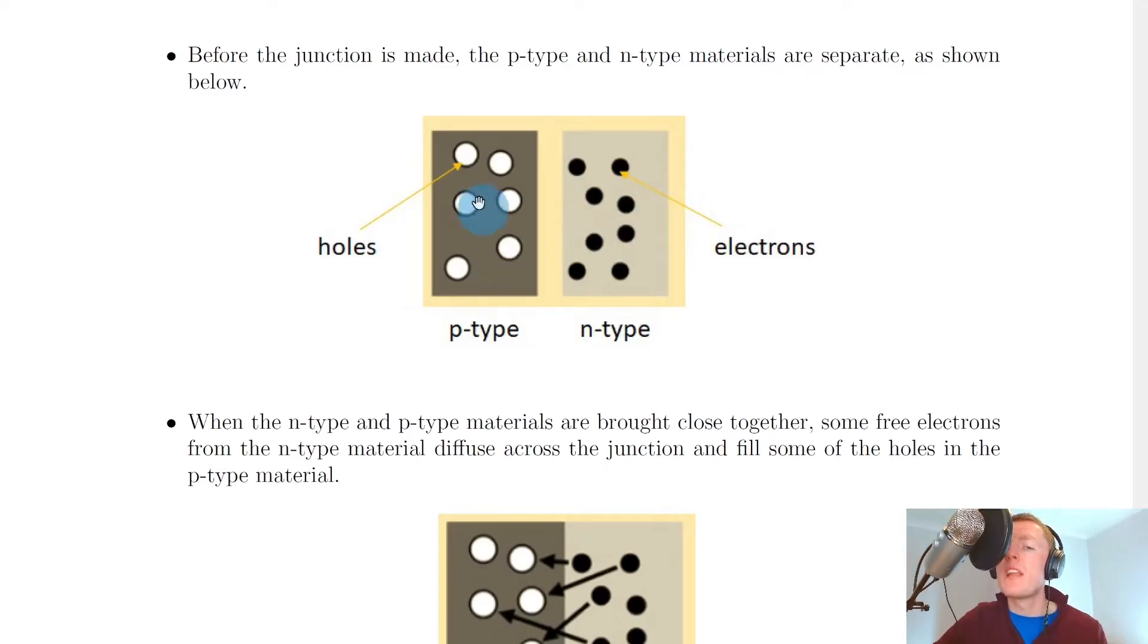Now remember, there will also be electrons in the P-type and holes in the N-type, but we've not drawn those because they're not really important for this process.